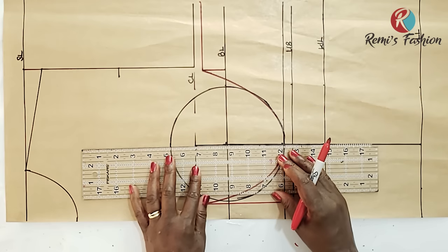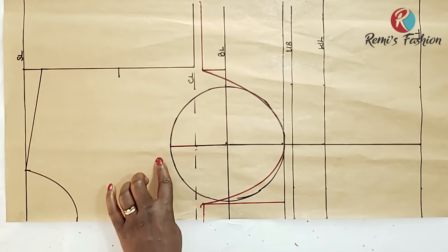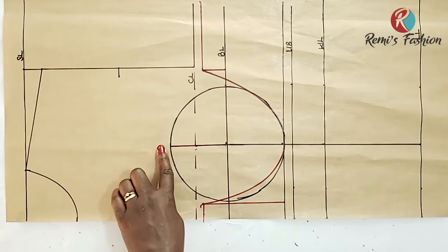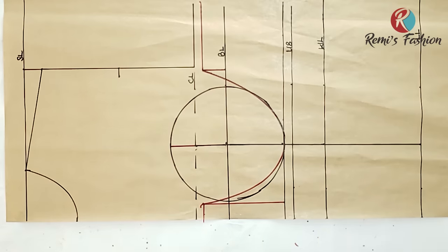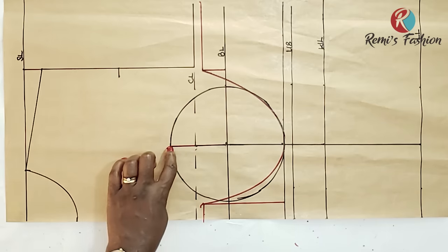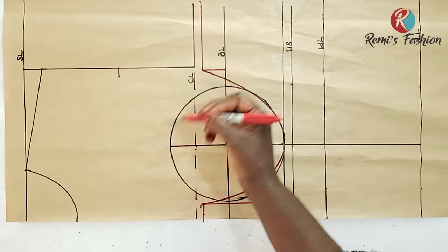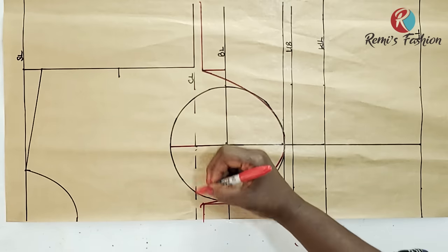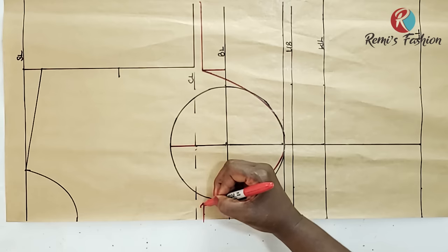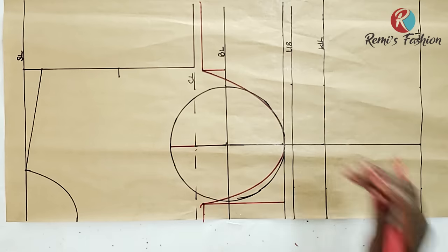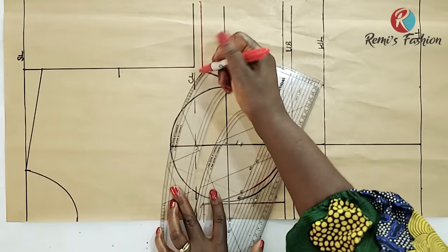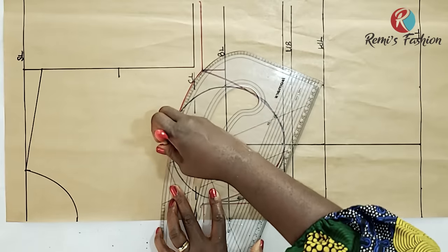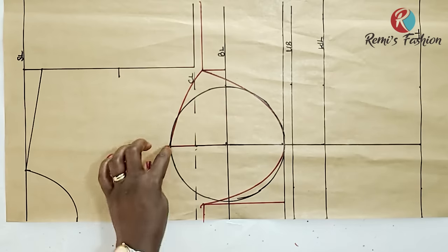Next, extend the dart line upwards. At the top of the circle, you can go up by half an inch or one inch, or come down by half an inch or one inch depending on whether you want to show a bit of flesh. For this tutorial, I'm going to leave my point on top of the circle. I'll connect from the top to the right-hand side and to the left-hand side using my curve ruler. So I'll connect from here up to the top, and then from here to this side as well.